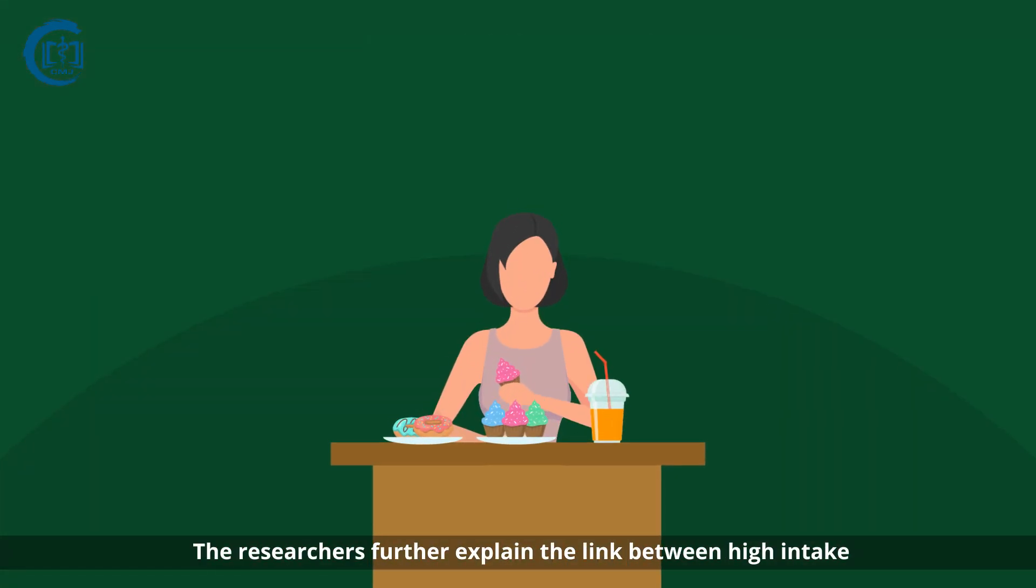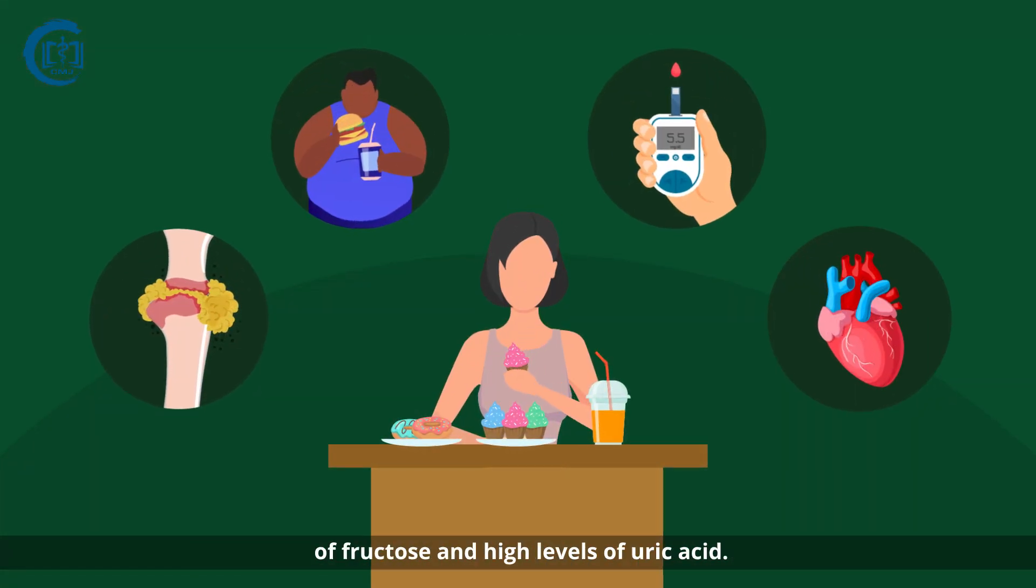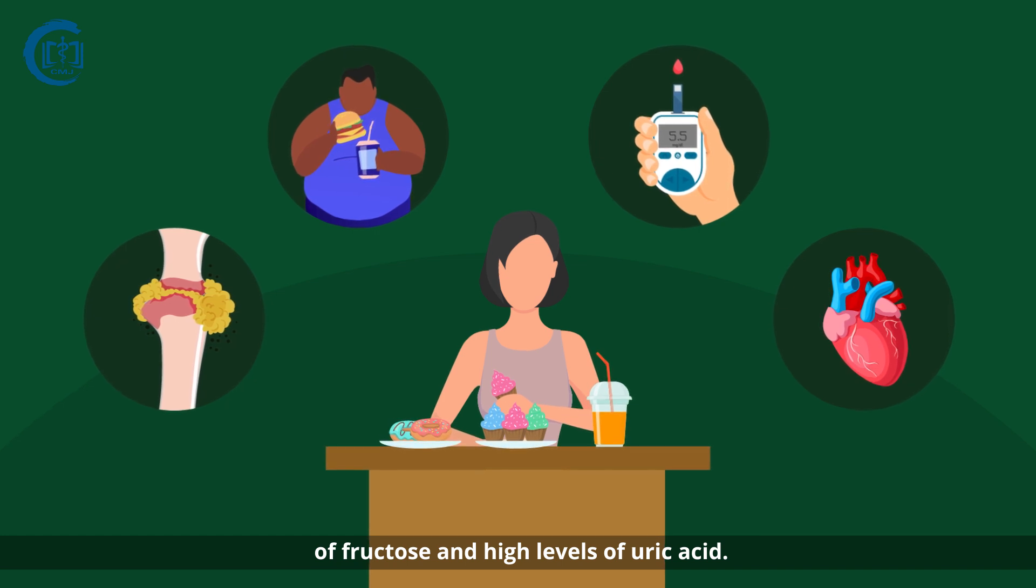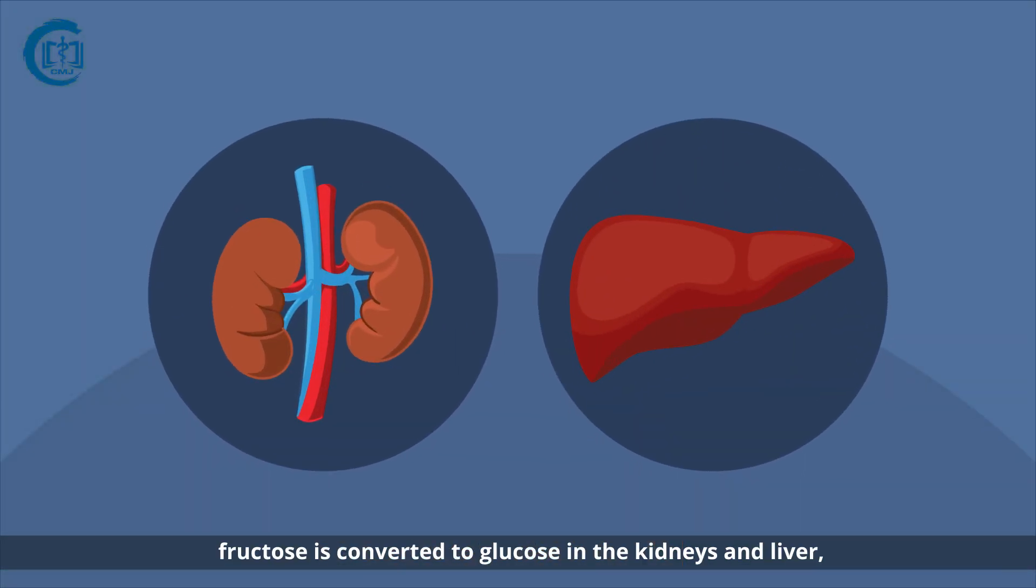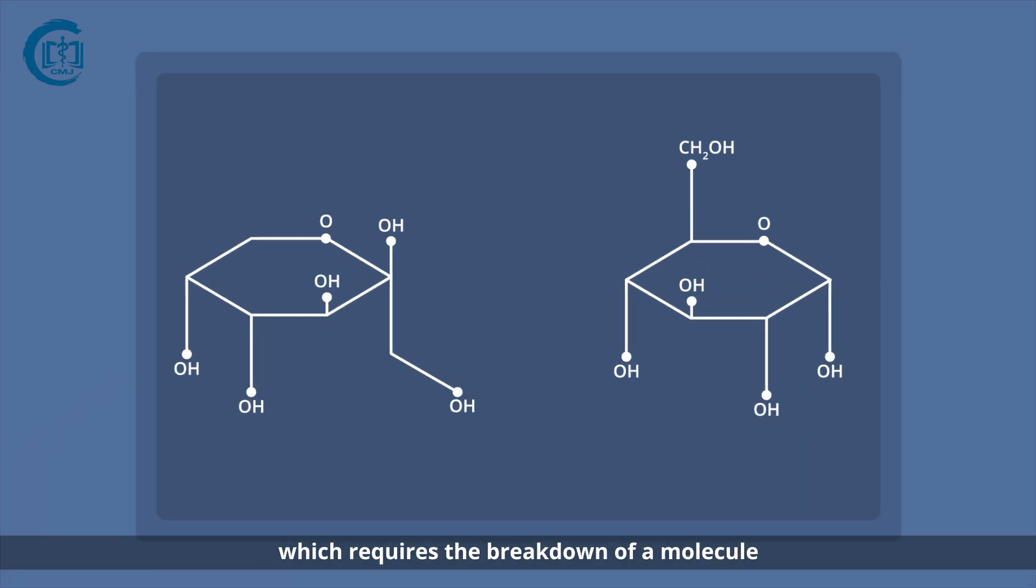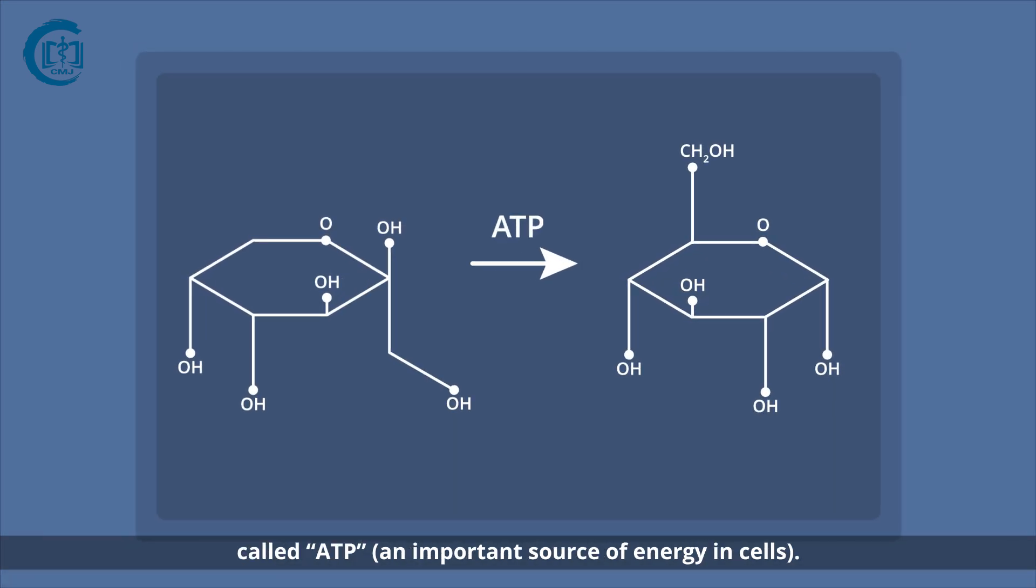The researchers further explain the link between high intake of fructose and high levels of uric acid. When fructose enters circulation, it is converted to glucose in the kidneys and liver, which requires the breakdown of a molecule called ATP,